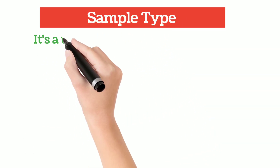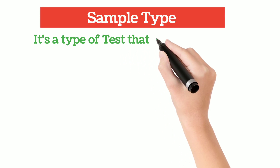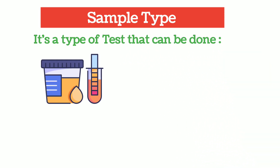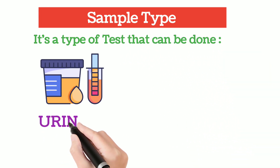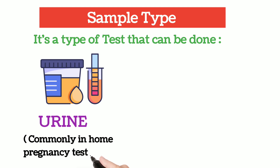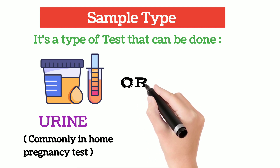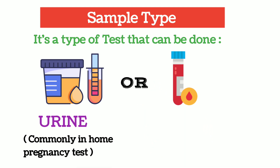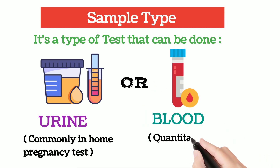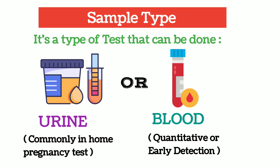To perform the ECG test, two types of samples are needed: either a urine sample, which is commonly used in the home pregnancy test and that is a qualitative type, or a blood sample, which is for the quantitative test or earlier detection of the ECG.